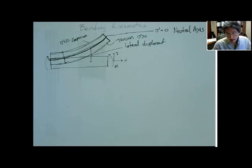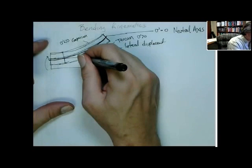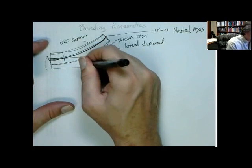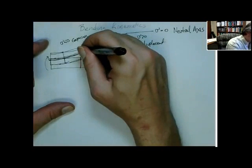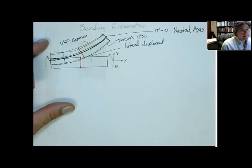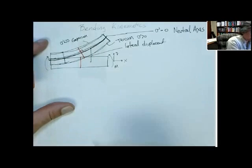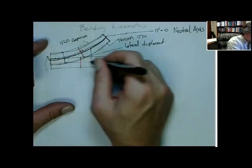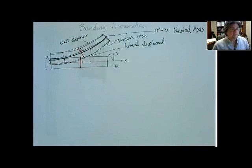The other assumption we make is that any cross-section — a planar cross-section in its undeformed shape — when it deforms, it remains planar. And also, it remains perpendicular to the fibers. That's the second assumption.